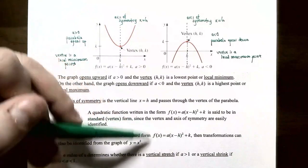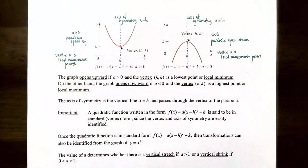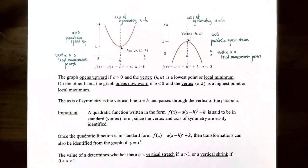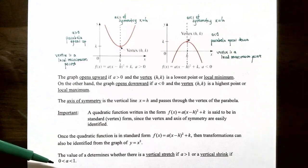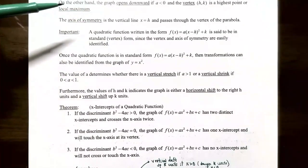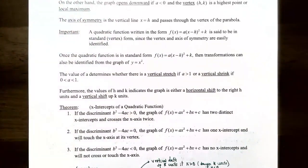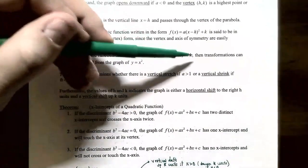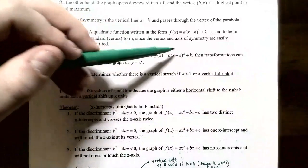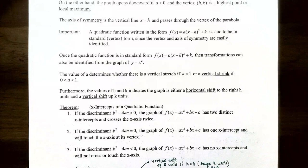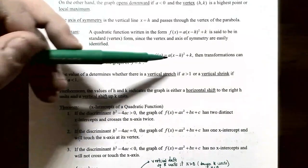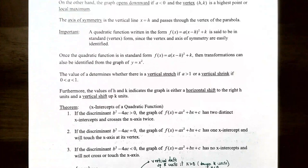From standard or vertex form, you can also identify transformations from y = x². The value of a outside the parentheses gives a vertical stretch if a > 1, or a vertical shrink if 0 < a < 1. The value of k gives a vertical shift — up if k is positive, down if k is negative — and h inside the parentheses gives a horizontal shift.